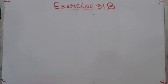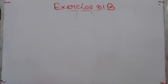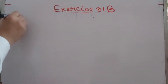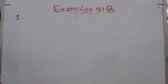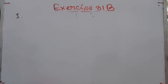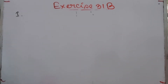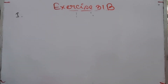Assalamu alaikum everyone, today we will solve Exercise 3.1b. Number one: find the reciprocals of 1 whole 1/3, 3 whole 1/2, 5 whole 7/15, and 3x by 4y. We already know what a reciprocal is from the previous classes.